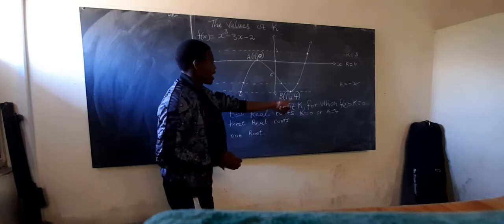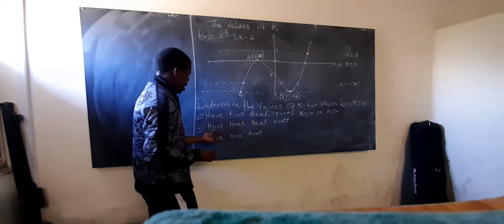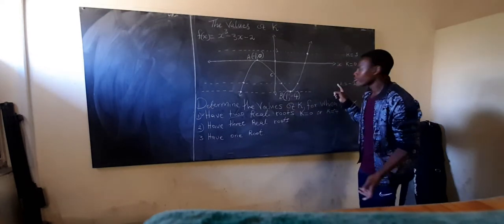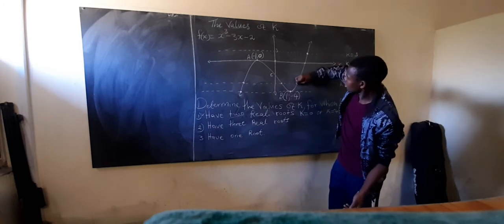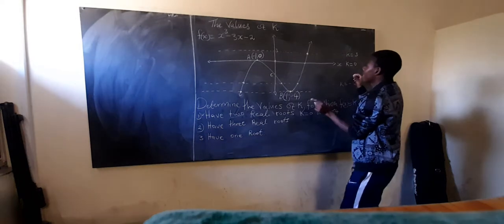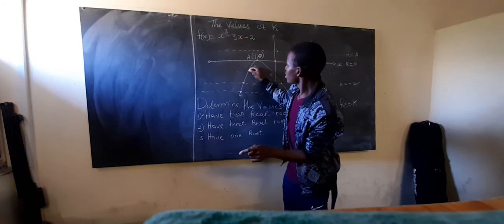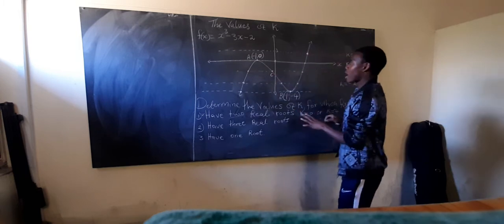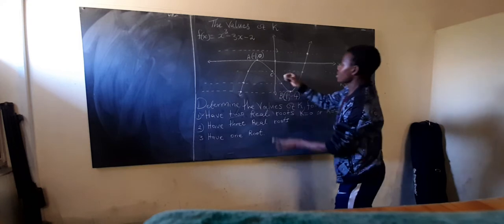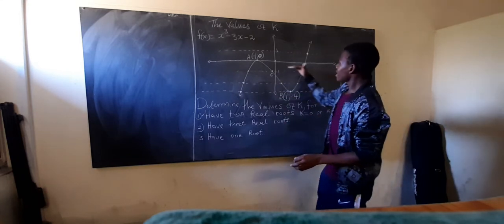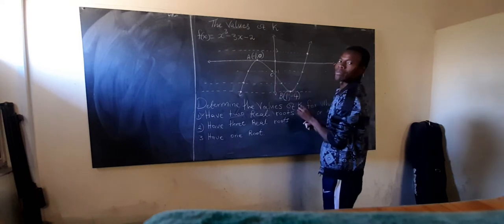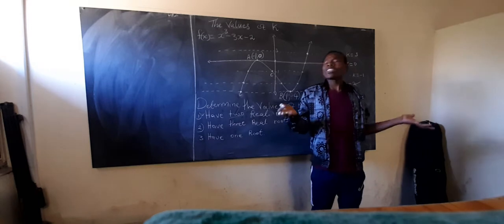For number two — determine the values of k for which f(x) = k has three real roots. Looking at the line we drew earlier at k = -2, it touched the graph here, here, and here — three times. Any horizontal line drawn between the two turning point y-values will intersect the graph three times, giving three real roots.